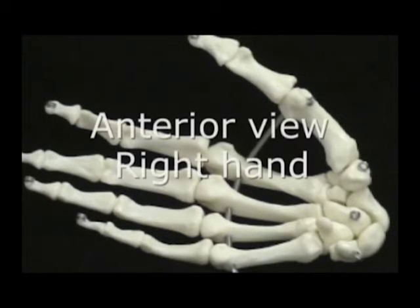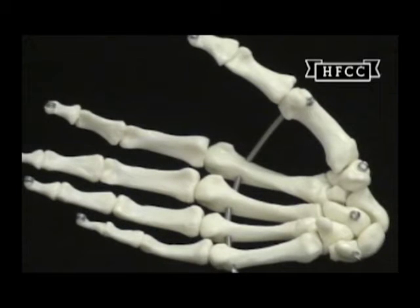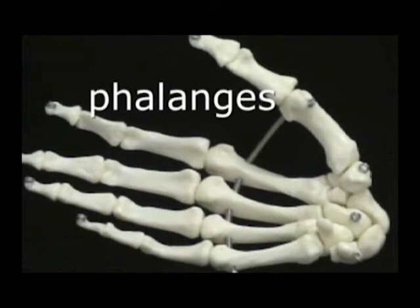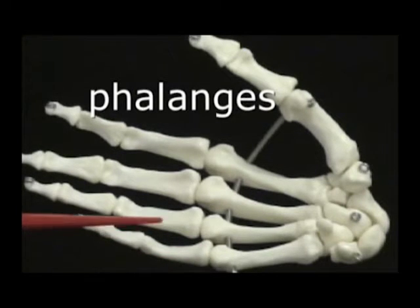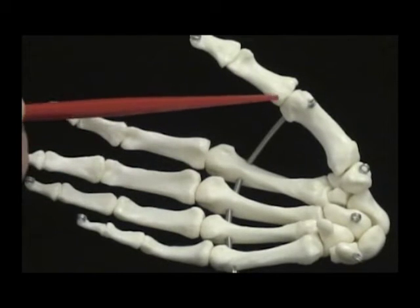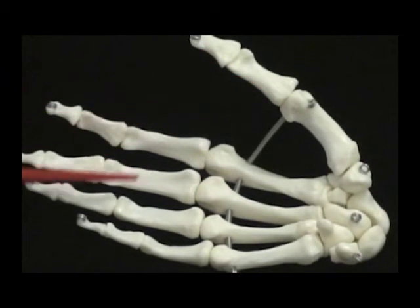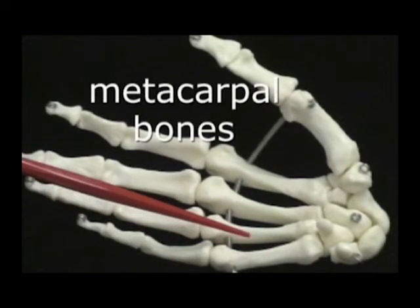First will be the phalanges. There are five of them, with the thumb being the first of the phalanges. The second through the fifth have three bones in them. The first phalange of the thumb has only two, with the middle phalanx missing. Check your lecture textbook for more details.